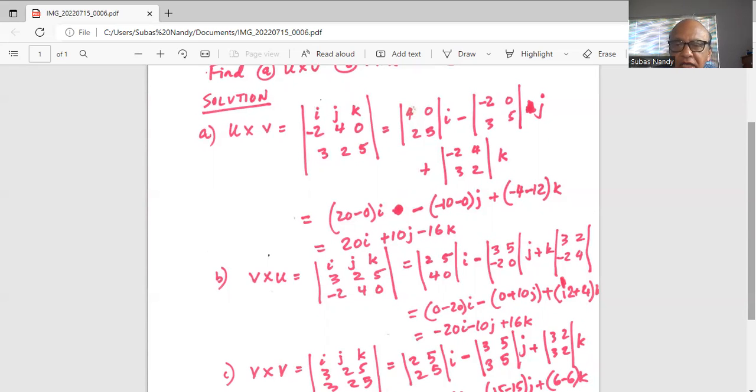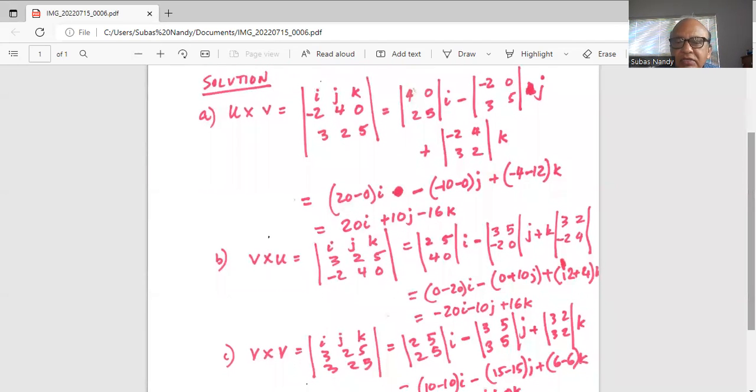And then for k, it is 3 times 4, 12 minus, minus 2 times 2, minus, plus 12, plus 4 is 16. So it's -20i, -10j, and plus 16k.